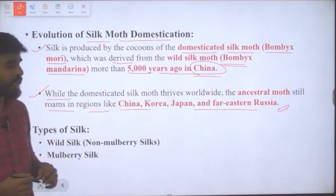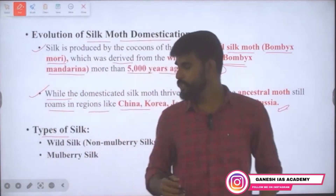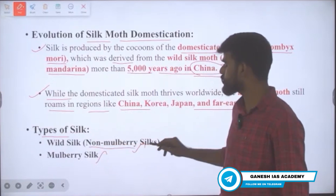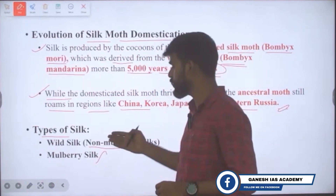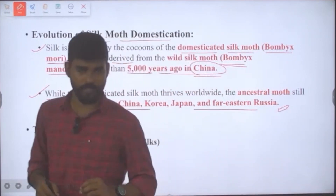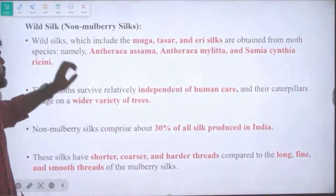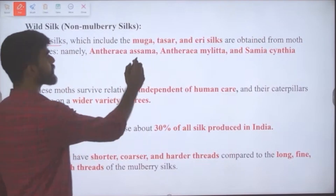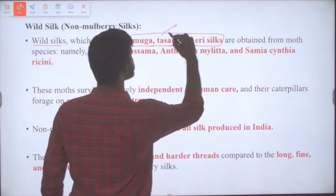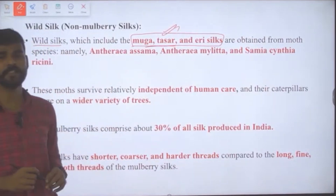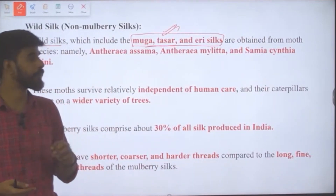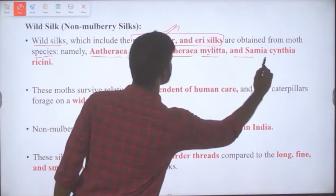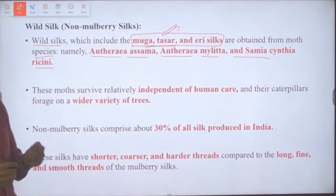There are two types of silk: wild silk and mulberry silk. Wild silk, also called non-mulberry silk, includes muga, tassar, and eri — important for UPSC Prelims. These silks are derived from wild moth species such as Antheraea asama, Antheraea mylitta, and Samia cynthia ricini.